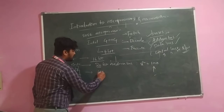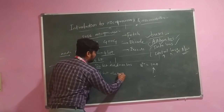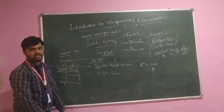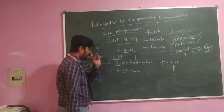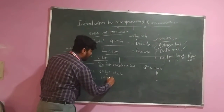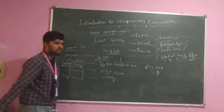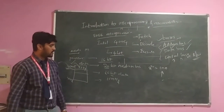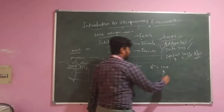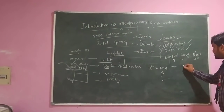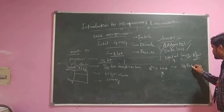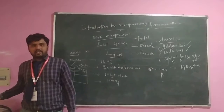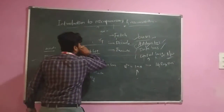Similarly, the 8086 has a 16-bit data bus — as it is a 16-bit processor, it has a 16-bit data bus. The operating frequency is 10 MHz, which is used for enhancing the speed of operations. It also has different registers — around 14 general purpose registers. These are the basic ideas of the 8086 microprocessor.